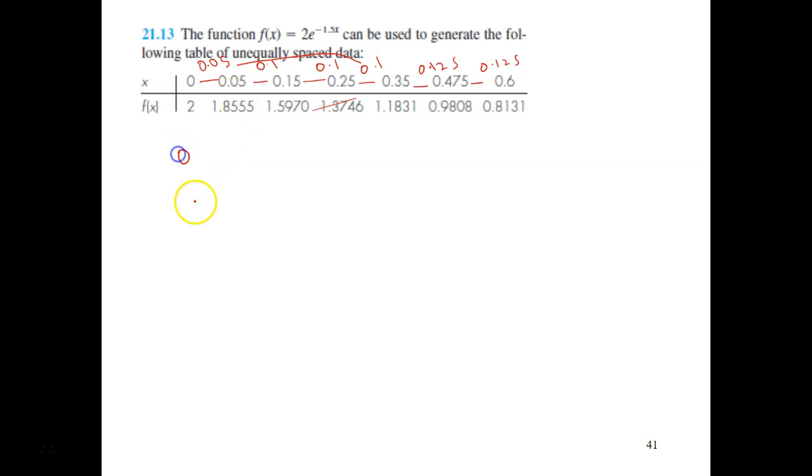So let me just put here 0, 0.05, 0.15, 0.25. Okay, so between this and this, you may use trapezoidal rule.